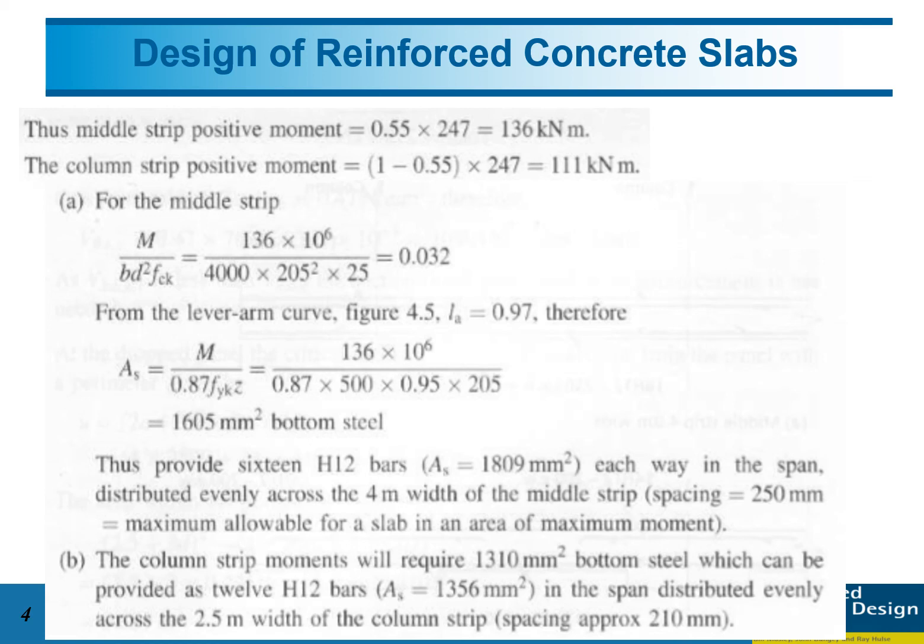After that, by using the same equation with moment of 111 kN·m, we get the k-value and then As. We have the As required for the column strip is 1356 mm².